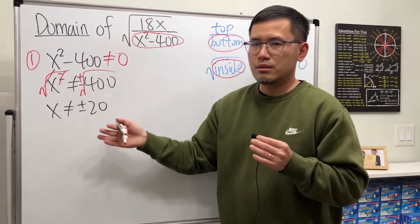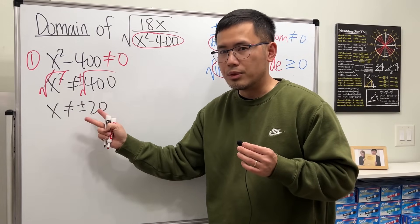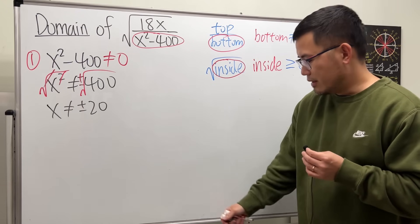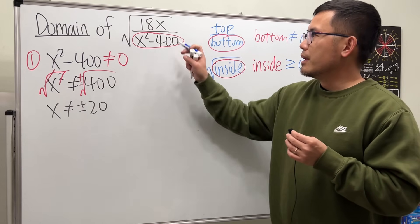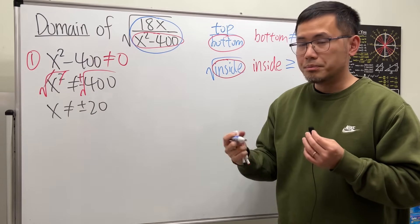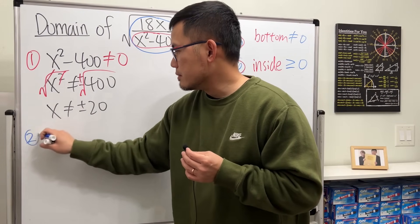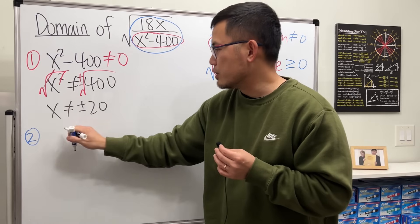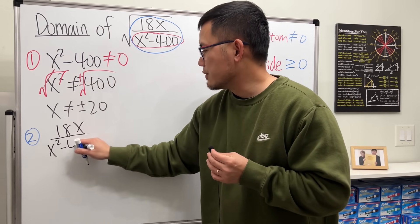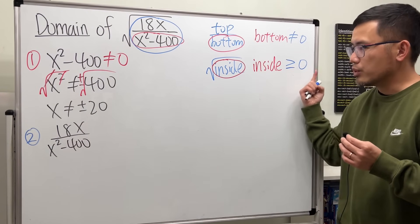Solving this non-equal inequality works the same as solving a regular equation, and we found two numbers that cannot be used for this function. Now the harder part: we have to ensure the inside of the square root is non-negative. So for the second part, we set 18x over x squared minus 400 greater than or equal to zero.